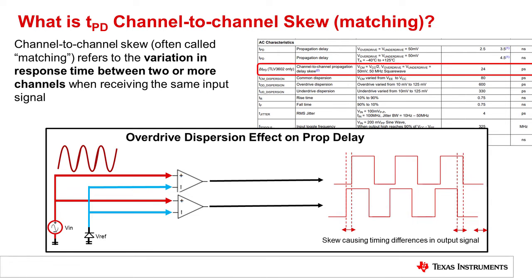Another key spec that is rarely mentioned with standard comparators is skew, which is also known as matching. This spec refers to the variation in response time between two different channels with reference to the input signal. The value in the datasheet indicates the amount of potential overlap across two channels. It's worth noting that when we compare skew between single-channel parts and multi-channel parts, the skew is about 10 times greater when the channels are not on the same die.